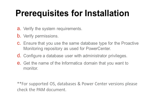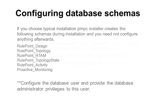Make sure you have the Informatica domain name handy so we can provide that during installation. Make sure the domain name is correct because we cannot change it after you complete the installation. For more details and supported matrix you can see the PAM document — I have set the link at the end of this video. For typical installation, the BMC installer creates the default schemas such as rule point design, topology, rule point item, and so on. You need to have six schemas along with the administrator user, and you must configure database user with administrator privileges before you proceed with the installation.